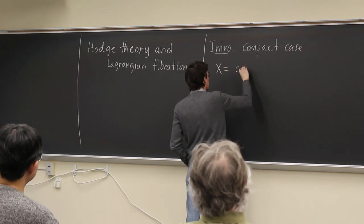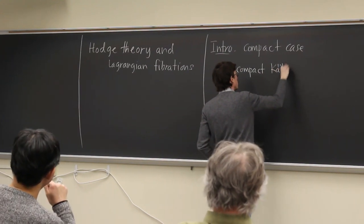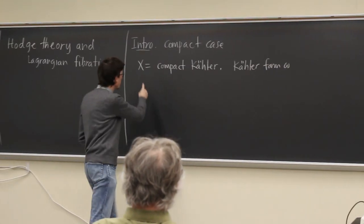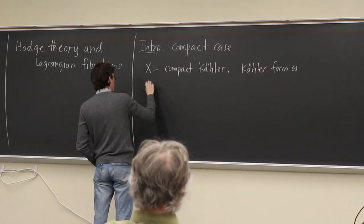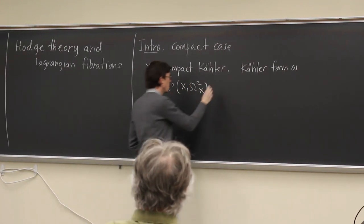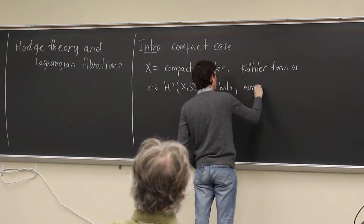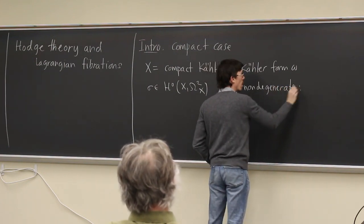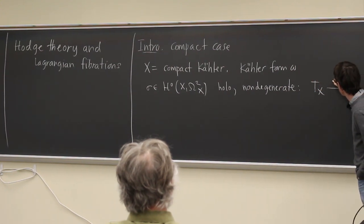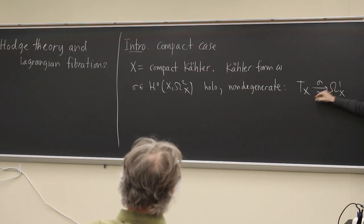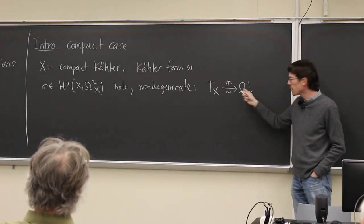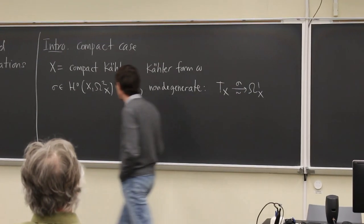X will be a compact Kähler manifold with some Kähler form omega, and I want to assume that X is holomorphic symplectic. So I will assume that I have some holomorphic 2-form on X that's a symplectic form — this should be holomorphic and non-degenerate. Non-degenerate means it gives an isomorphism between the tangent sheaf and the sheaf of one-forms by contraction. This kind of thing is called holomorphic symplectic.